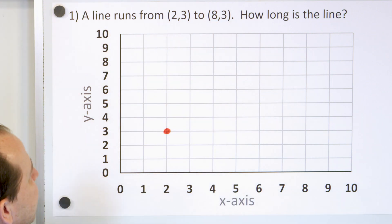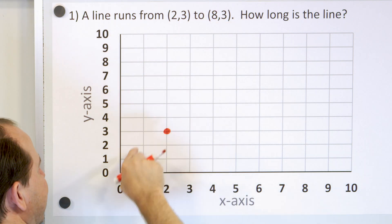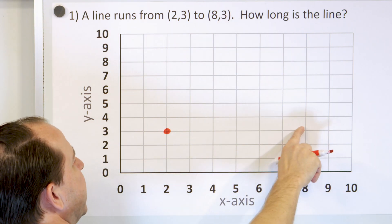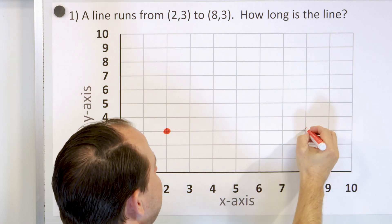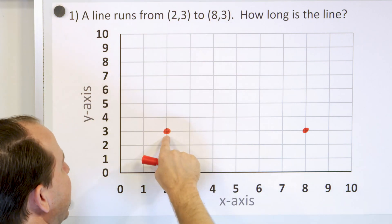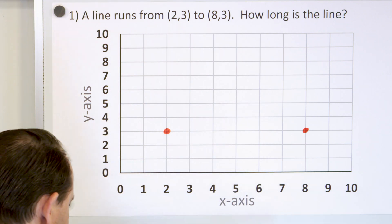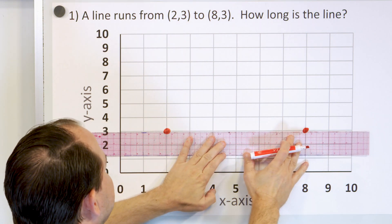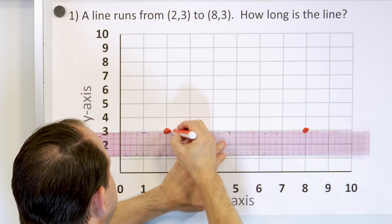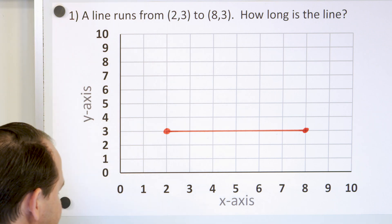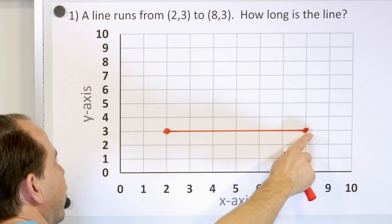Next, 8,3 is the endpoint of the line. X is 8, so we go to X equal to 8 and then we go up 3 units for Y. Y is equal to 3 and X is equal to 8. And here is the endpoint of the line. So we have now two points of the line. The line runs from this point to this point. Now let's draw this line as straight as we can. So now we've drawn a line segment that starts at this point and terminates over here.